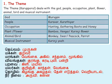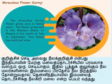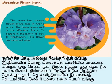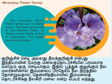The Kurinji flower is a miraculous flower which blooms once in 12 years. It grows well in the Western Ghats — the mountainous area — flowering in the months of July to September. This flower has medicinal value and is used in Ayurveda for the treatment of swellings, edema, and neurological disorders. It appears in the hills of the Western Ghats as if a violet-colored blanket has completely covered the mountains.